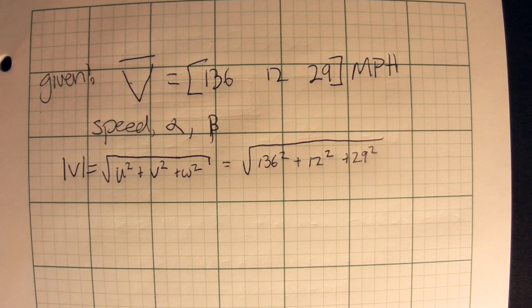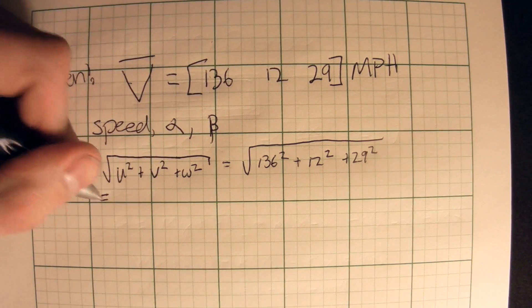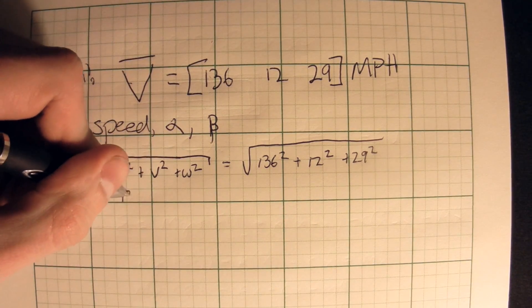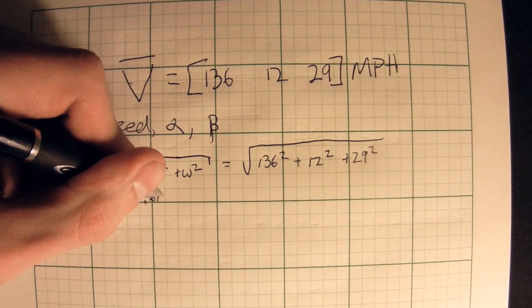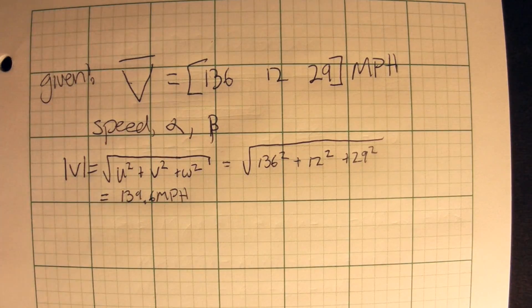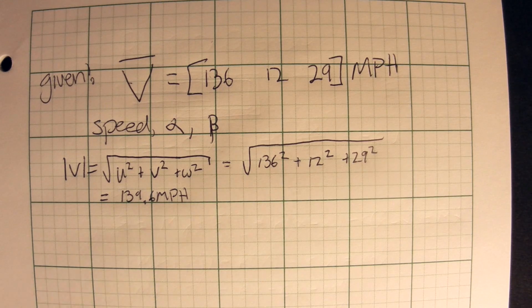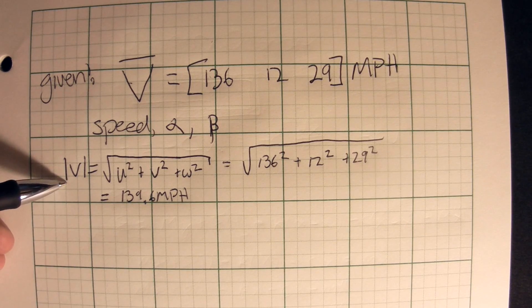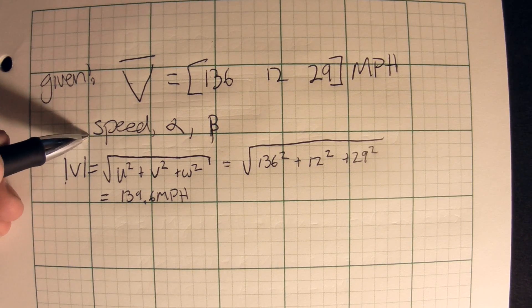So we have square root 136 squared plus 12 squared plus 29 squared. Okay, so plug that into your calculator and it turns out that this velocity is equal to 139.6 miles per hour. That is how fast the airplane is going in whatever direction it happens to be facing. Okay, so that's the speed of the aircraft.